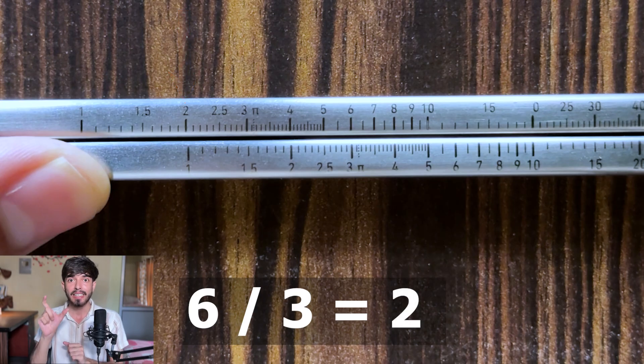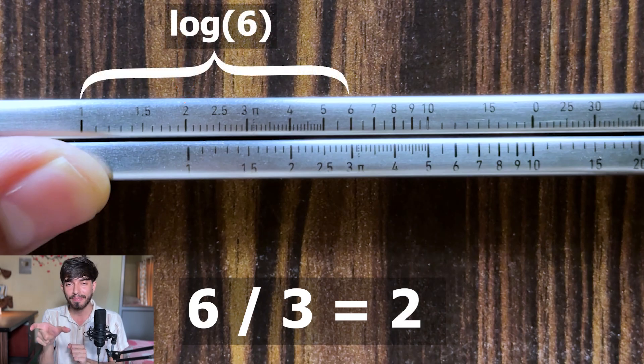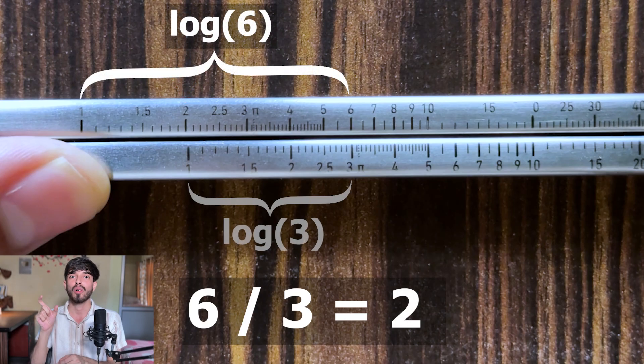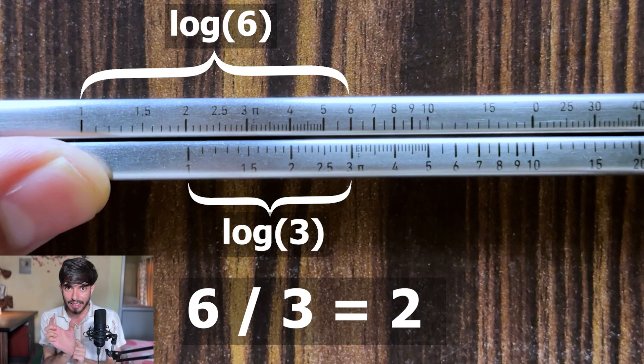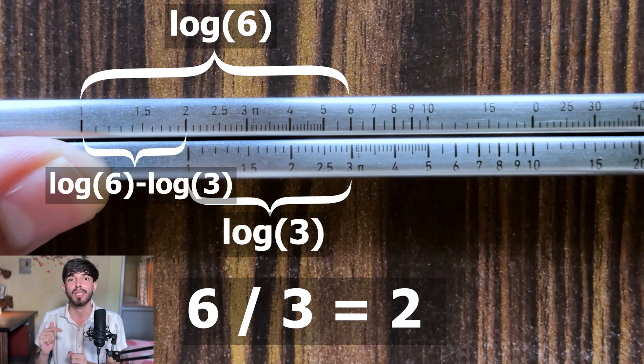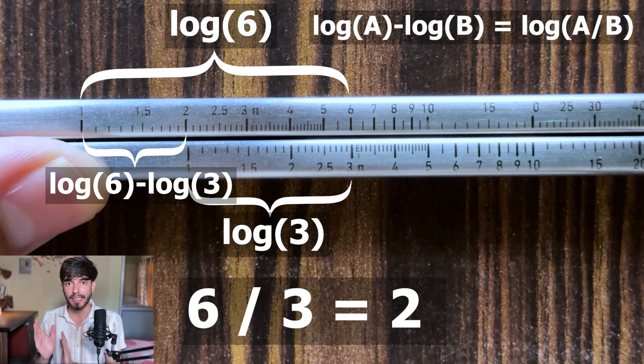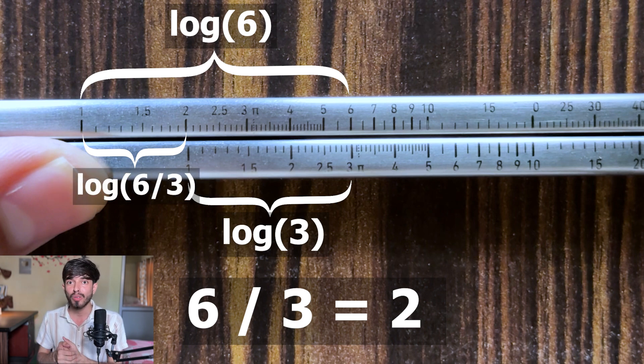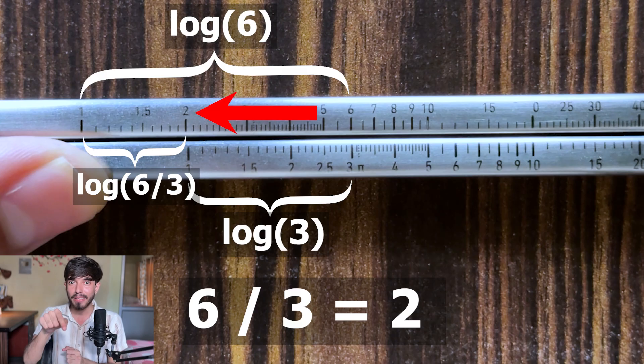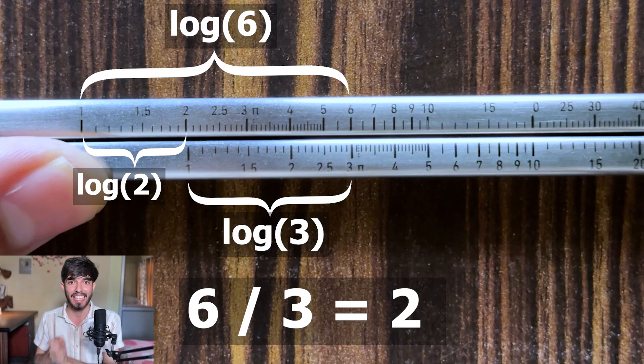How? See this length is log of a and this length is log of b. So this is log of a minus log of b. And what is log of a minus log of b? Log of a by b. So this length is log of a by b and this number is a by b which is 6 by 3 which is 2.